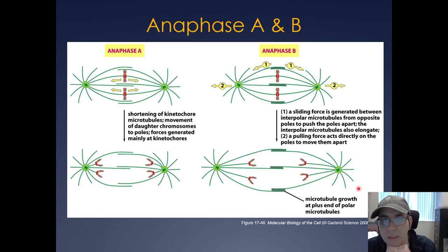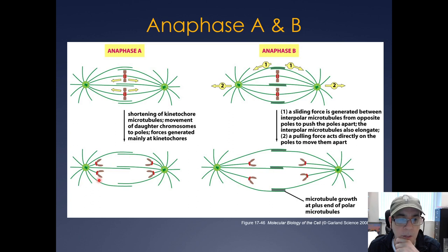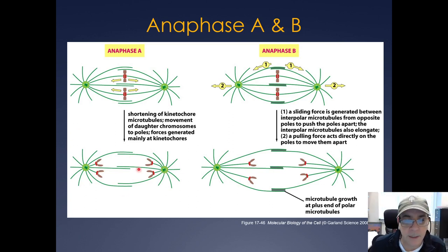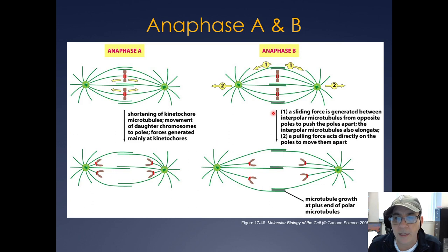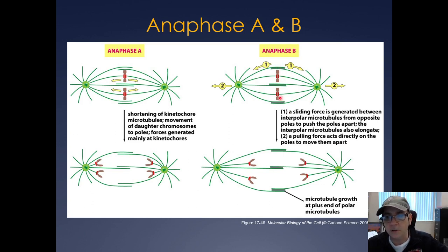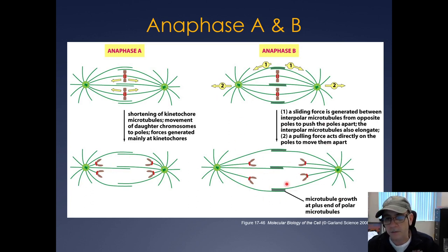Anaphase has two sub-phases. In anaphase A, cohesin is cleaved and chromosomes move toward opposite spindle poles — kinetochore microtubules shorten and the depolymerization force pulls chromosomes to each pole. In anaphase B, interpolar microtubules with motor proteins attached force the two spindle poles apart, increasing the distance between them, which is really important for separating the two future daughter cells.